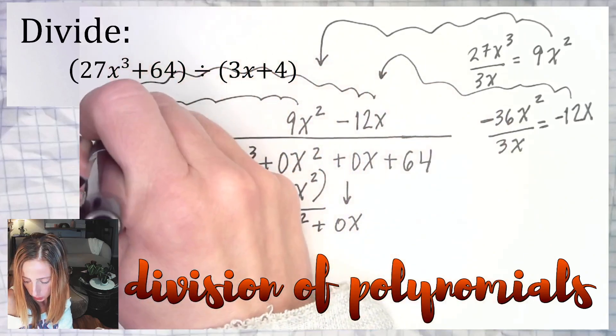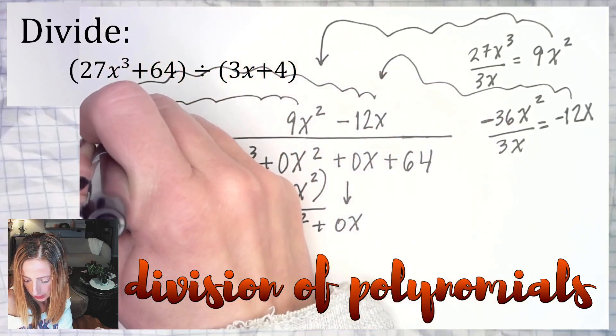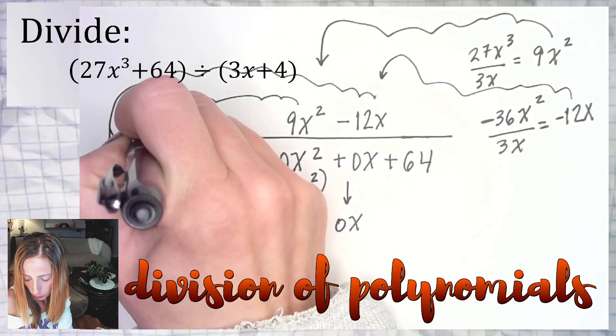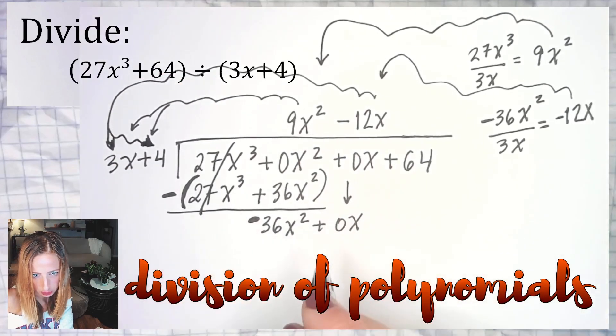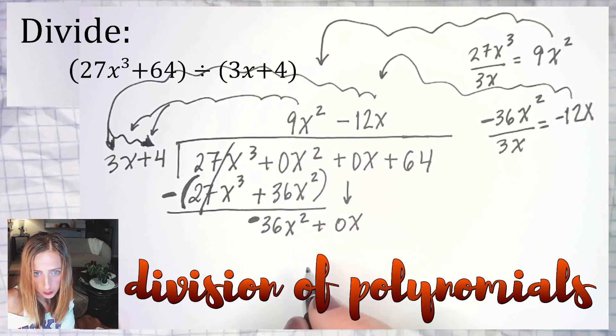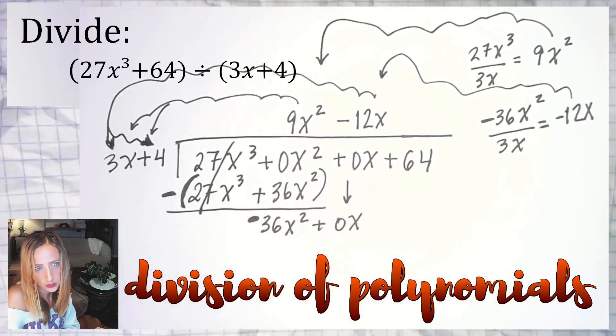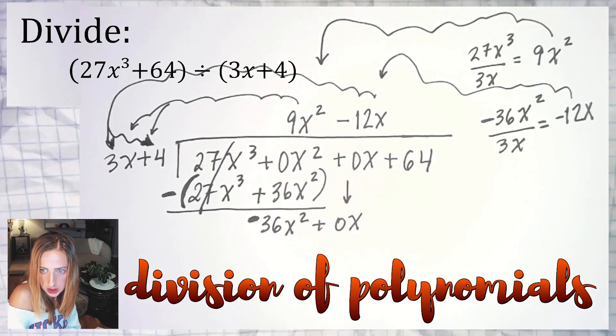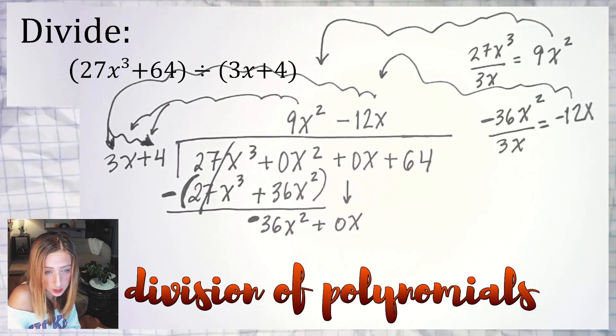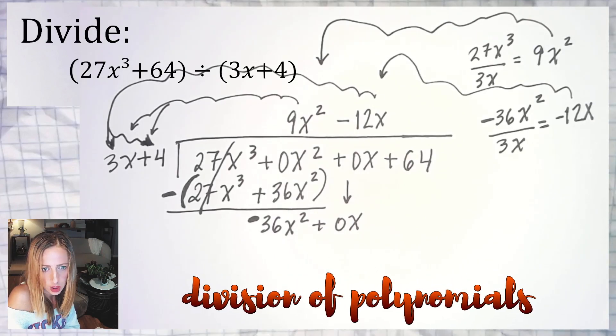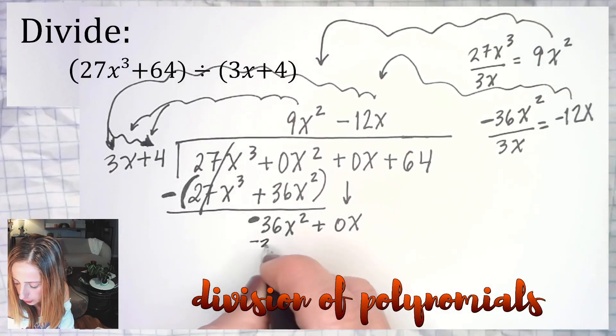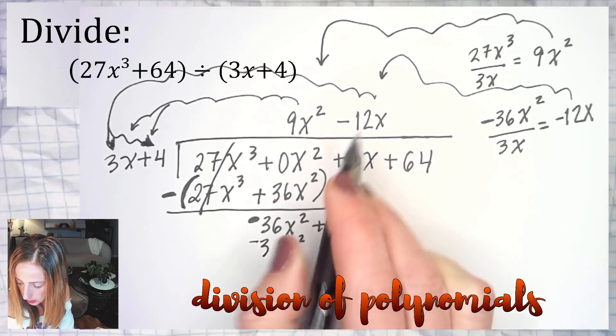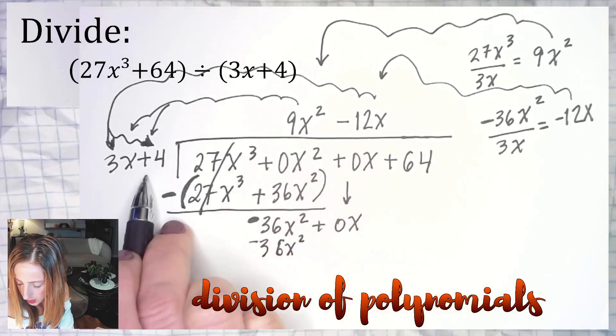So what do I end up getting? Well, -12 times 3 is 36, but negative times positive is negative, so you will have -36x². Then -12x times +4 will be another negative, -48x right there.